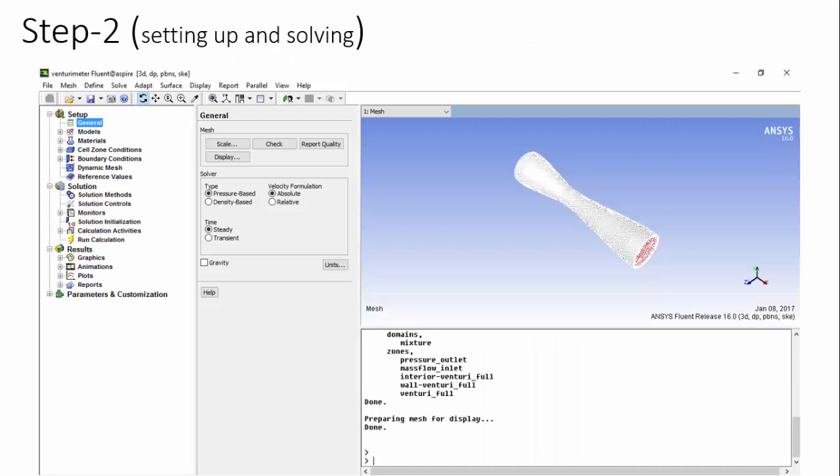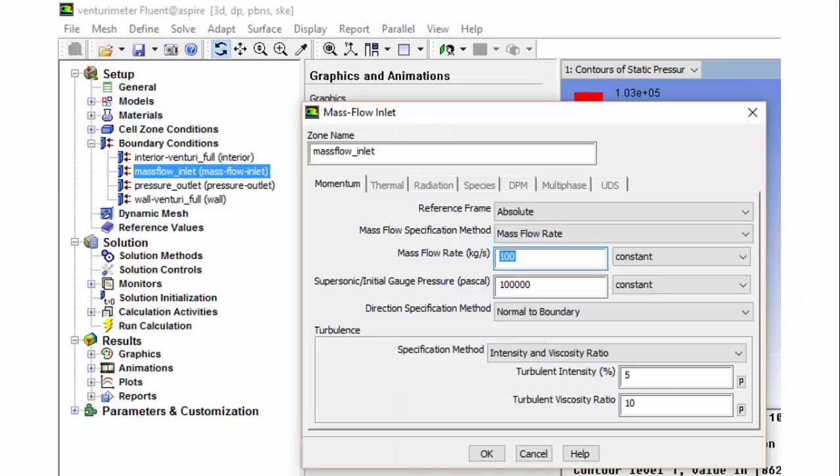Let's go to step 2, where we will set up the boundary conditions and solve it. Expand the boundary condition tab and double click the mass flow inlet boundary to set the desired mass flow rate of fluid flowing through the VentureMeter.